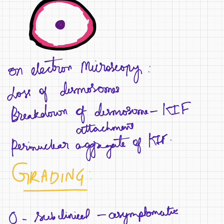On electron microscopy there is loss of desmosomes, there can be breakdown of desmosome-keratin intermediate filaments attachment, and perinuclear aggregate of keratin intermediate filaments.